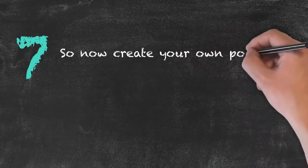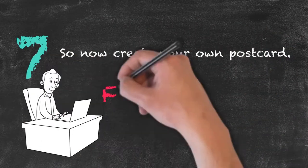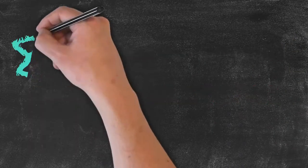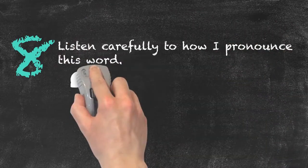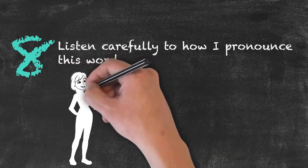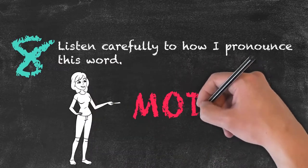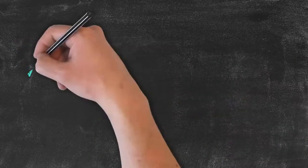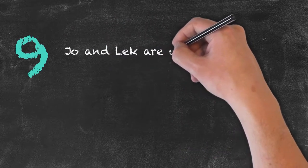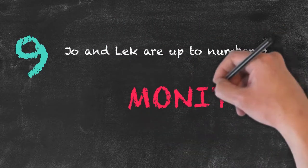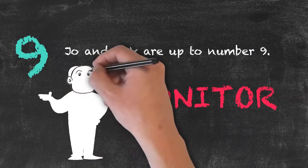Next example, having done certain bits of work we can now say to the students, 'Okay, now create your own postcard,' and the teacher there is acting as a facilitator. Example number eight, the teacher may say something like, 'Okay, now listen carefully to the way in which I pronounce this word.' So what the teacher is doing in this case is actually modelling the language, acting as a model. For our final example, whilst an activity is going on the teacher may write a note to himself, 'Joan and Lec are up to number nine in this particular activity.' So what the teacher is doing at this point in time is to act as a monitor for the class.